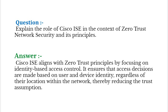Your answer should be: Cisco ISE aligns with zero trust principles by focusing on identity-based access control. It ensures that access decisions are made based on user and device identity regardless of their location within the network, thereby reducing the trust assumption.